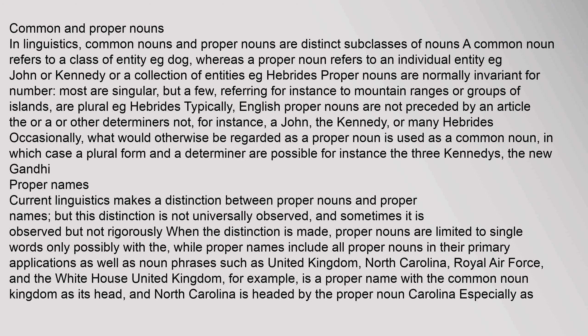In linguistics, common nouns and proper nouns are distinct subclasses of nouns. A common noun refers to a class of entity, e.g. dog, whereas a proper noun refers to an individual entity, e.g. John or Kennedy, or a collection of entities, e.g. Hebrides. Proper nouns are normally invariant for number — most are singular, but a few referring to mountain ranges or groups of islands are plural. English proper nouns are not normally preceded by an article or other determiner — not, for instance, a John, the Kennedy, or many Hebrides. Occasionally, what would otherwise be a proper noun is used as a common noun, making plural forms and determiners possible, as in the three Kennedys or the new Gandhi.